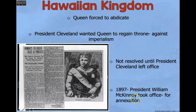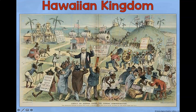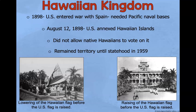This was not resolved until President Cleveland left office. President William McKinley took office and he was for the annexation of Hawaii. In 1898, the US entered war with Spain and needed Pacific naval bases. On August 12th, 1898, the US decided to annex the Hawaiian Islands. They did not allow native Hawaiians to vote on it. Hawaii remained a territory until it became a state in 1959. This shows a picture of the Hawaiian flag coming down before the United States flag was raised.